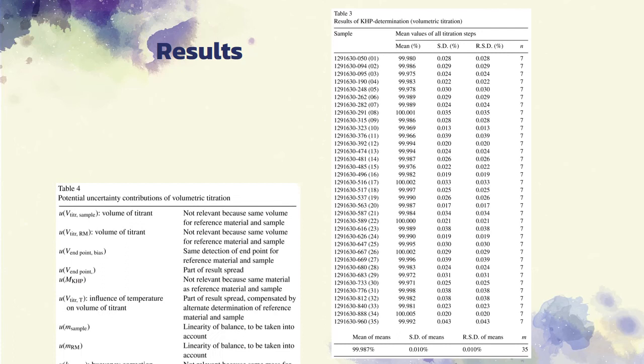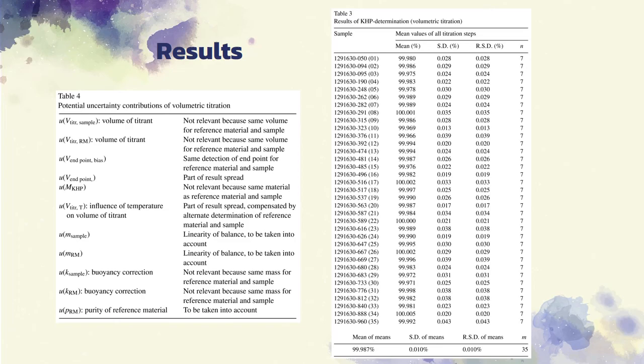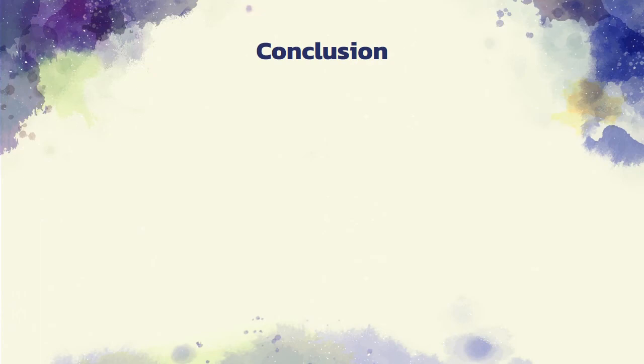Meanwhile, table 4 shows potential contributions to the combined uncertainty of the results received from volumetric titration. The different results for both methods used for the determination of the mass fraction of KHP are summarized in table 5.